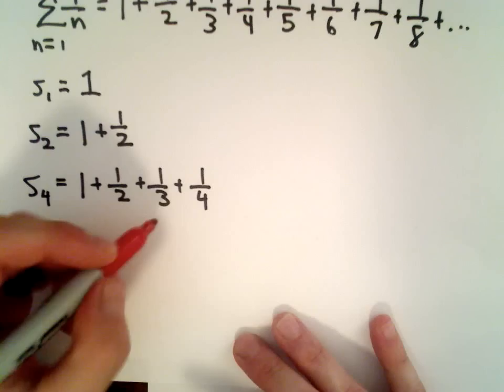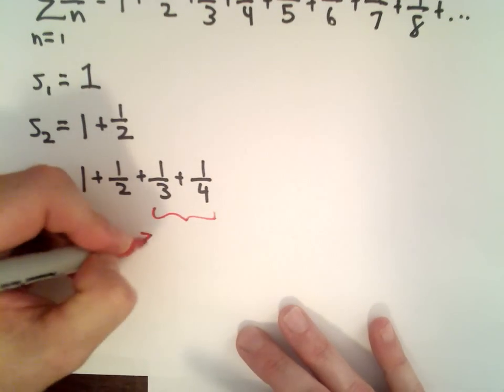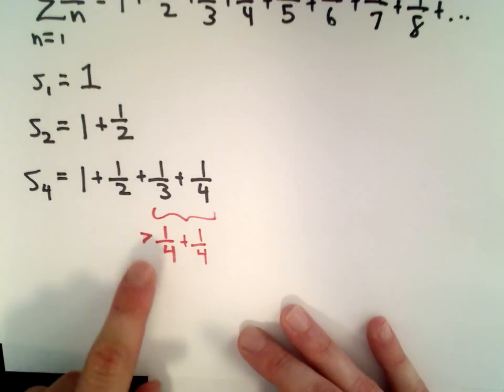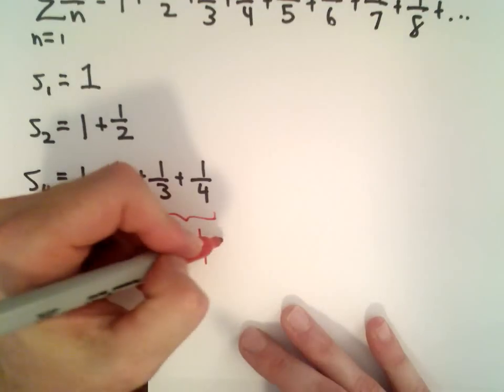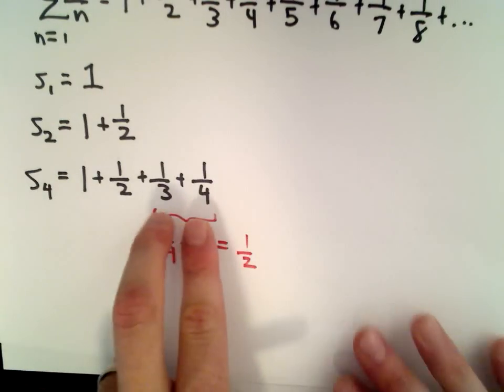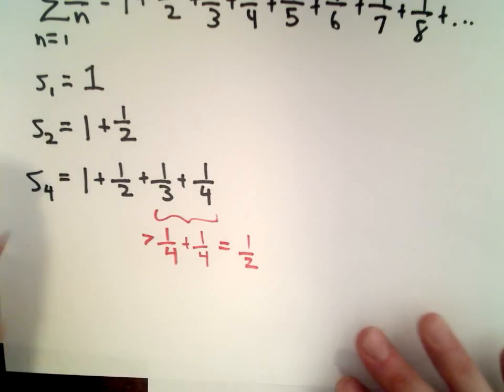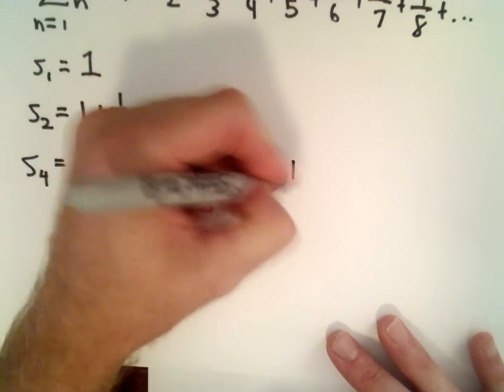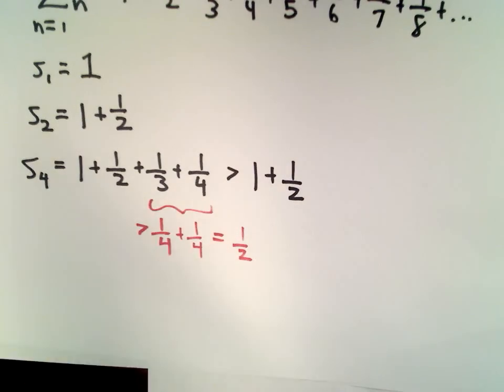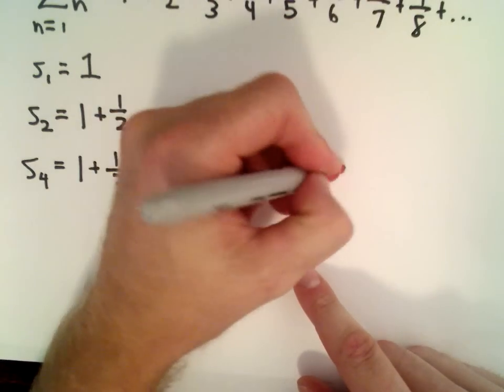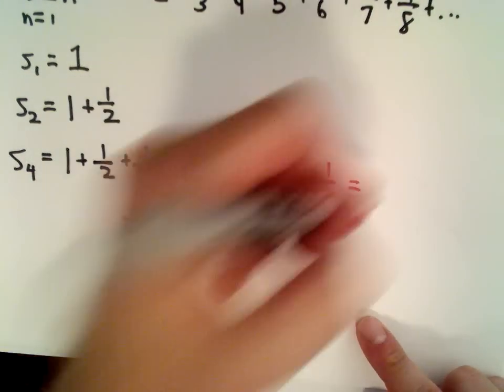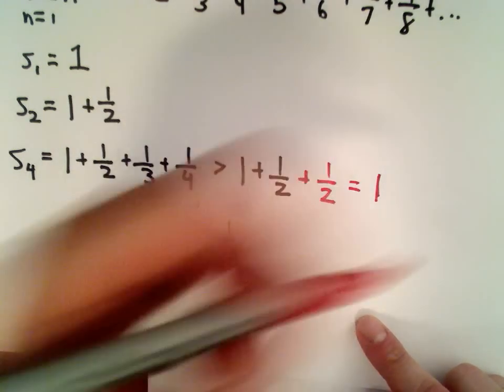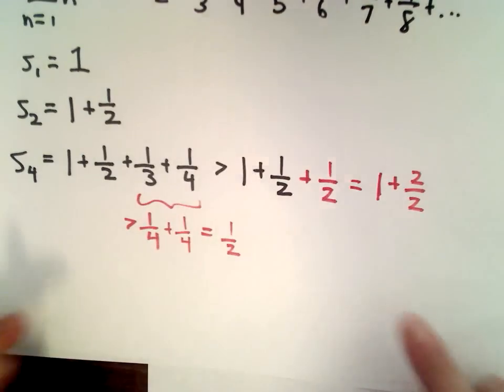If I look at these last two terms, 1 third plus 1 fourth, well, 1 third is certainly larger than 1 fourth. So if I add these two terms together, it's going to be larger than 1 fourth plus 1 fourth, which is 1 half. The argument is these last two terms are going to be bigger than 1 half. So that means S sub 4 is larger than 1 plus 1 half plus 1 half. I'm going to write that as 1 plus 2 over 2, just so we can start spotting a pattern.